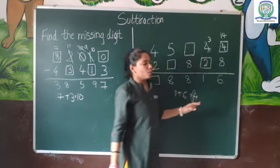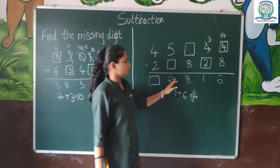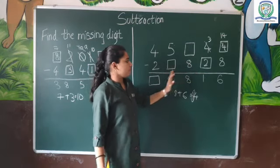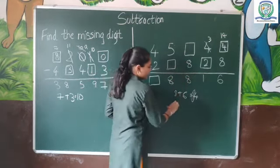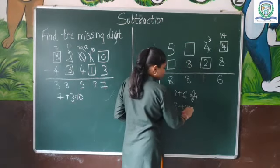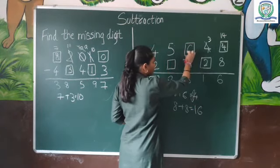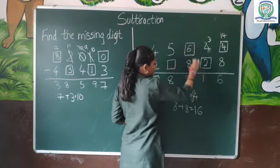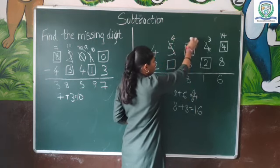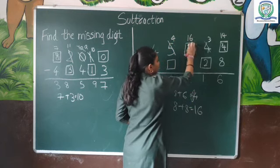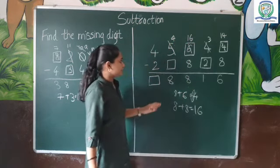2 minus 3. Here I have 8 plus 8 equals 16. Here I have the answer 6. This problem I have 4, this problem I have 16. So 16 minus 8 equals 8.